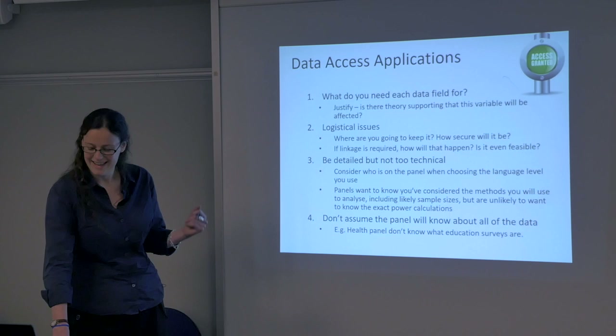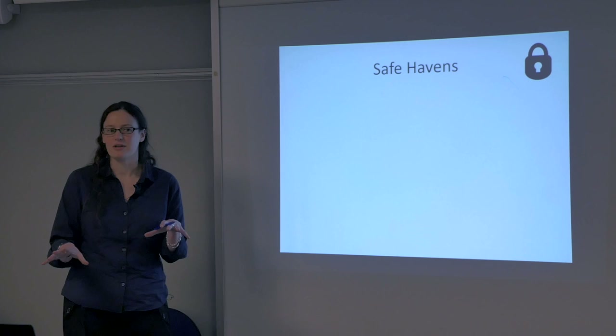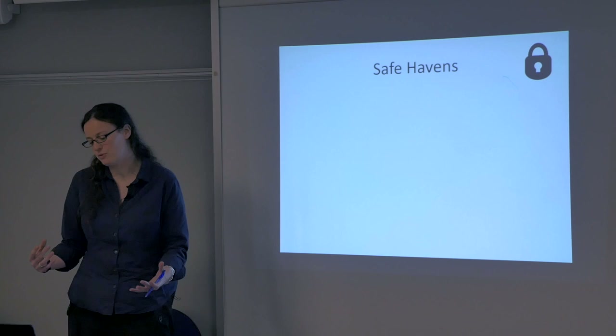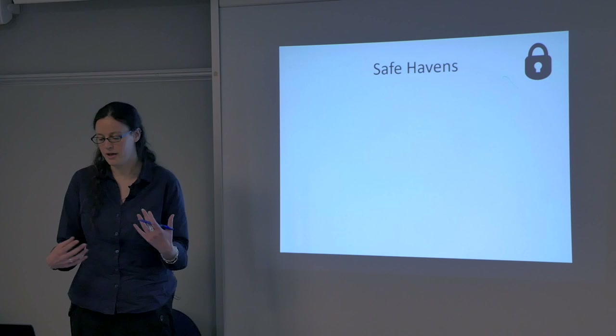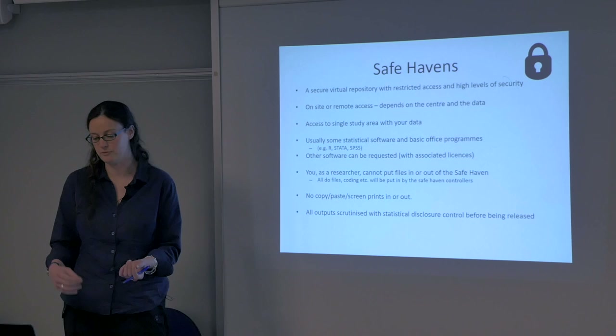Once you have your application granted, one outcome is that your data might be put into a safe haven. There are several safe havens around the UK — they are secure virtual repositories with restricted access and high levels of security, basically a massive parallel computing centre that you will have a virtual window into. You might have to go to a specific place on-site — the national safe haven is in Edinburgh, there's another one in Essex for ONS data — or you might have remote access, depending on what data you have, how secure it needs to be, and the centre you're working with.